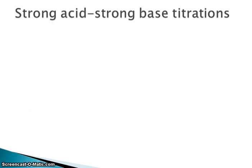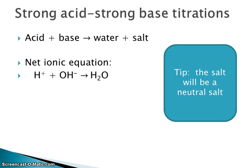Let's start by talking about strong acid-strong base titrations. The general equation is that an acid and a base make water and a salt — these are neutralization reactions, which you can think of as double displacement reactions. Specifically, if we have a strong acid with a strong base, our net ionic equation is H⁺ + OH⁻ → H₂O. We have other counter ions in there — they're spectator ions.